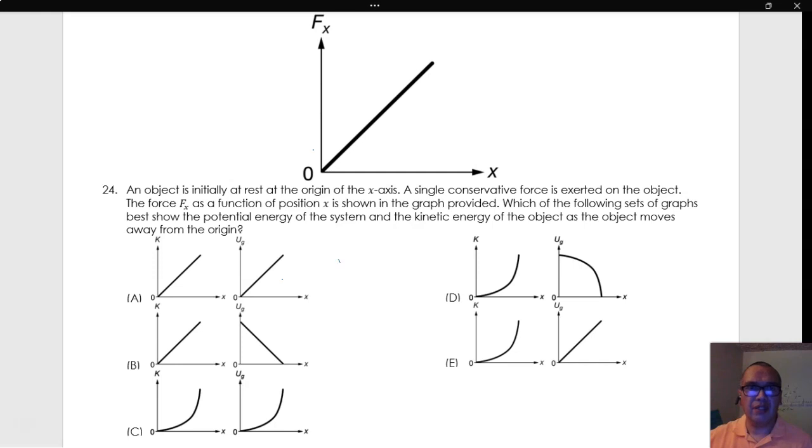Given that the conservative force is such that it is the negative of the derivative of the potential energy function relative to position, it is reasonable to assume that we have a slope for the potential energy that starts out at zero and becomes more and more negative as the position increases.